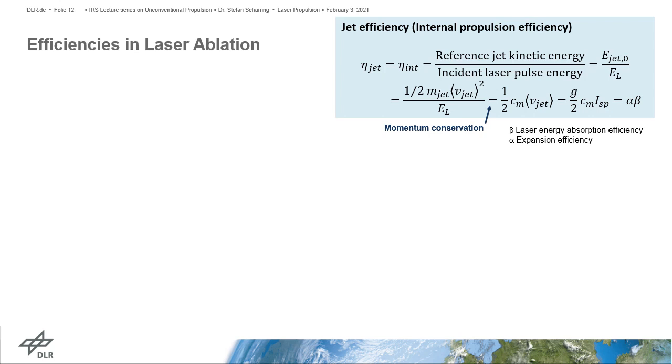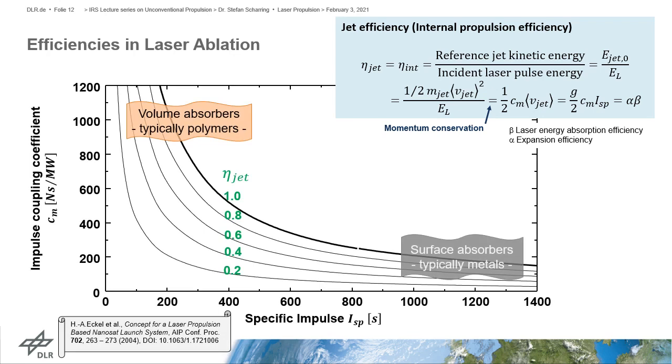We now come to the efficiencies in laser ablation. First of all, we have the so-called jet efficiency or internal propulsion efficiency. This is defined by the ratio of the reference kinetic energy of the propellant jet to the incident laser pulse energy. Reference means here that the kinetic energy refers to the average velocity of all exhausted particles. Using momentum conservation, one can express this in terms of the momentum coupling coefficient Cm and the specific impulse Isp. The physical background here is the efficiency beta of absorption of laser energy by the propellant and subsequently the efficiency alpha of gas expansion.